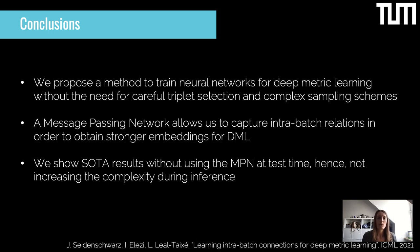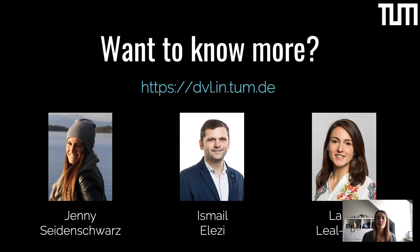To conclude, we proposed an approach to train neural networks for deep metric learning without the need for careful triplet selection and complex sampling schemes. We use a message passing network that captures intra-batch relations to obtain stronger embeddings. We show state-of-the-art results without using the MPN at test time, meaning we don't increase complexity during inference. For more details, please have a look at the paper.